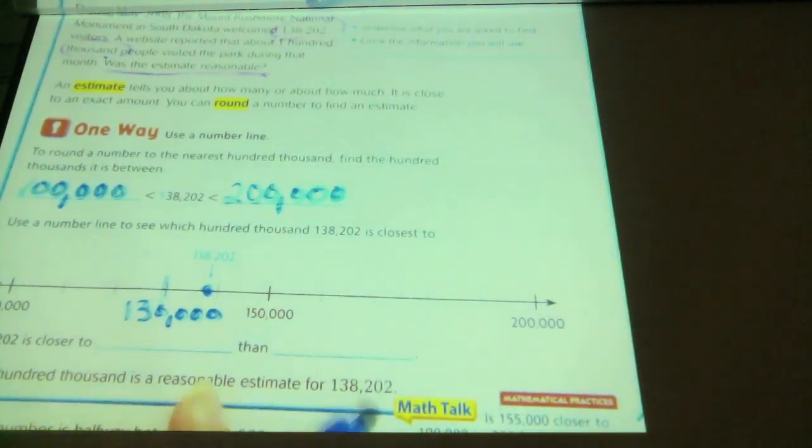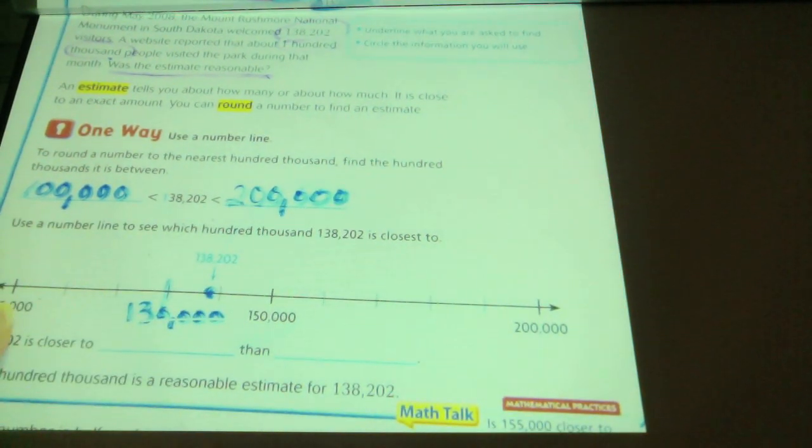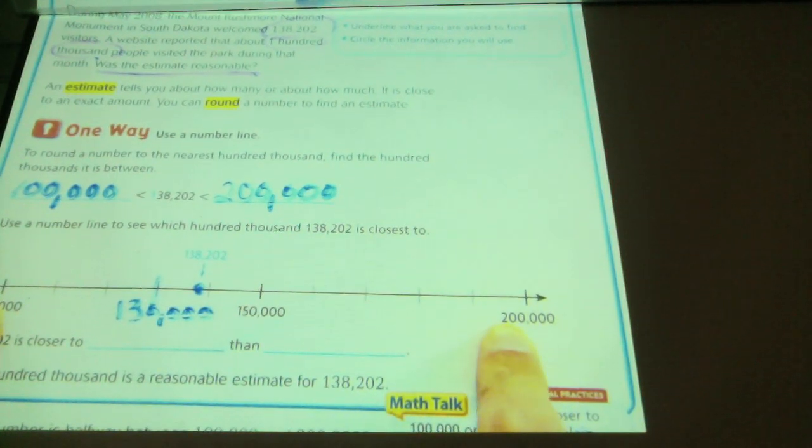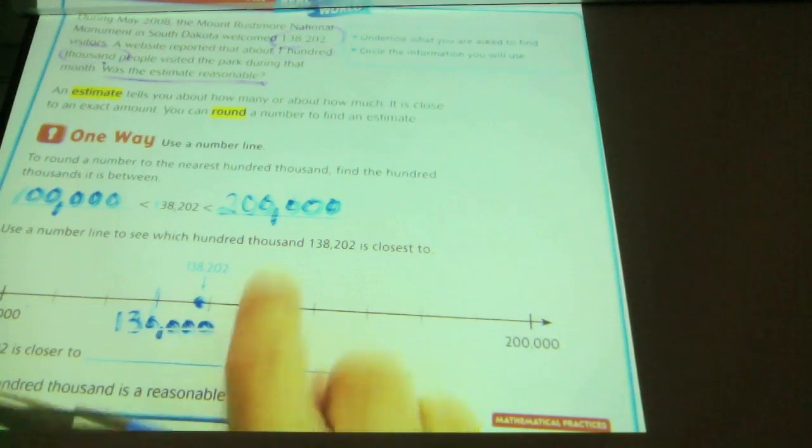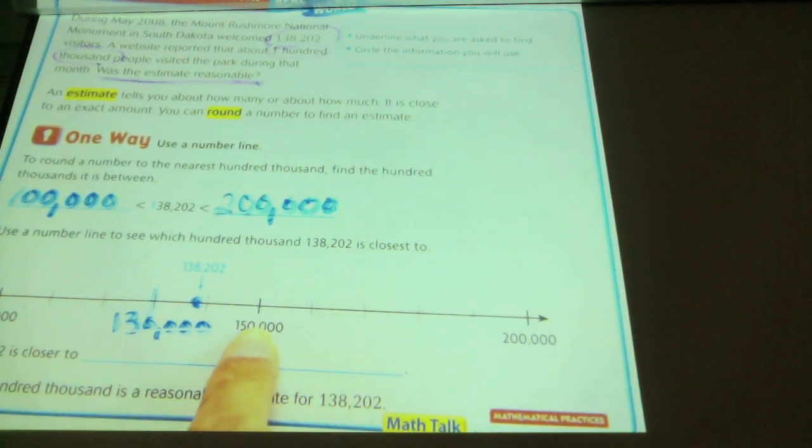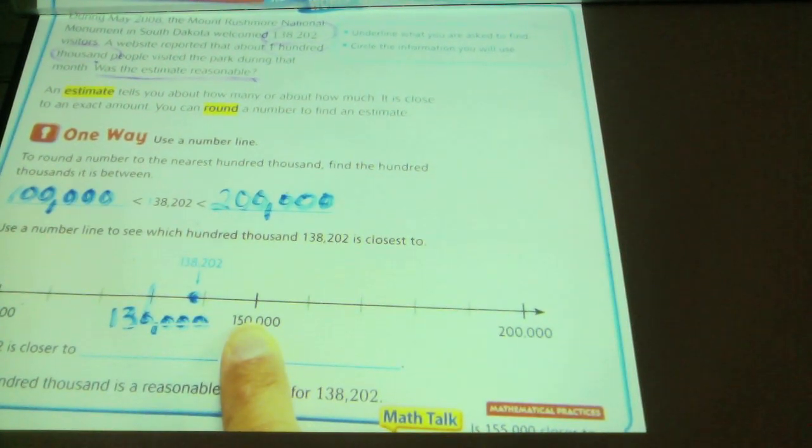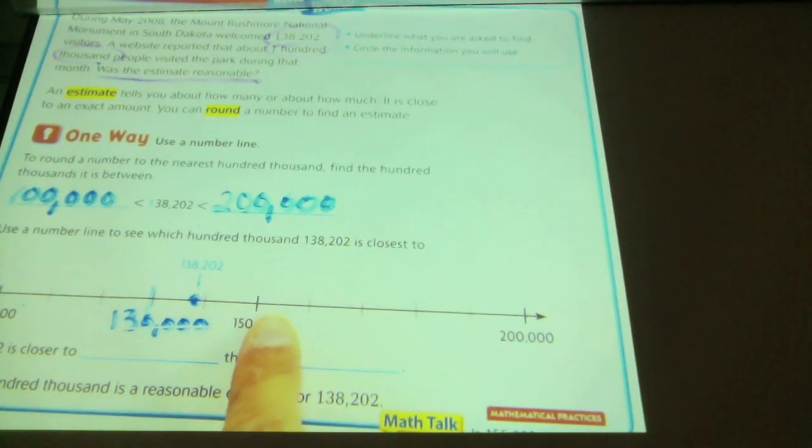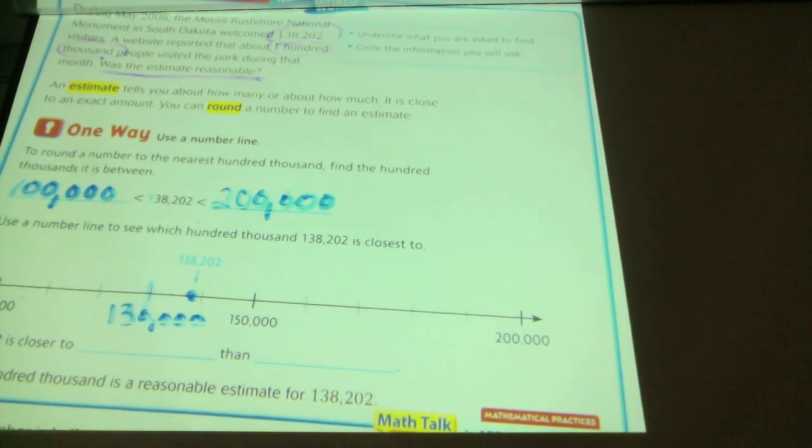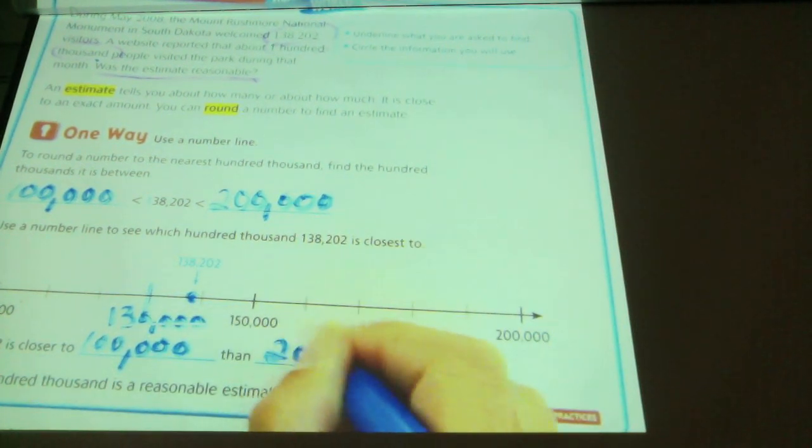Now you have to ask yourself, looking at this number line, I want everybody looking at my number line. Is this point closer to this number, or is it closer to this number? Just looking at it, raise your hand when you know. It's 100,000. So it's closer to this. If you're not sure, you can look at the fact that this is the halfway point, and it hasn't even gotten halfway there. So it has to be closer to this one. If it gets to the halfway point, then it might fall on this side. But it hasn't even reached the halfway point yet. So, 138,202 is closer to 100,000 than it is to 200,000. Go ahead and write that in.